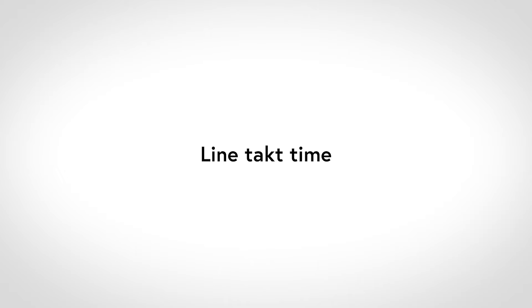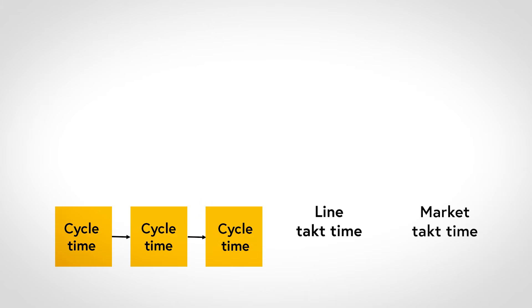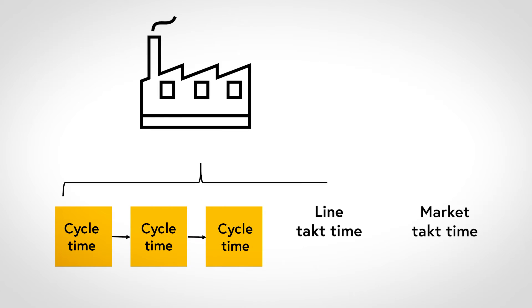Now we can introduce line Takt time for the original meaning of Takt time. The line Takt time should be close to the market Takt time. Finally, if we zoom in on each process — especially on a production line — they have their own cycle time: the time it takes from starting on a production order to finishing it. In an ideal plant, the average cycle time is equal to line Takt time, which equals market Takt time.